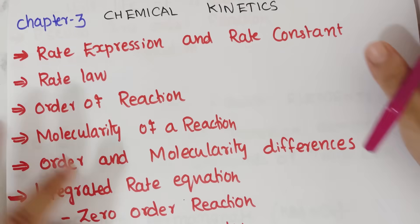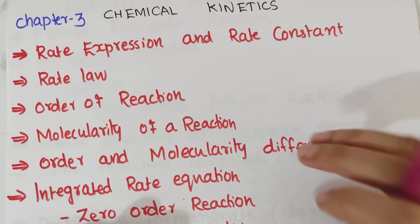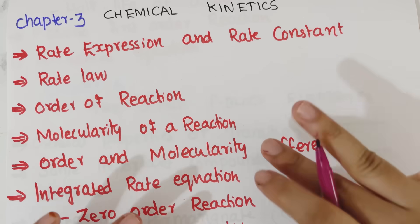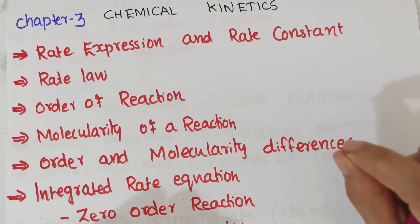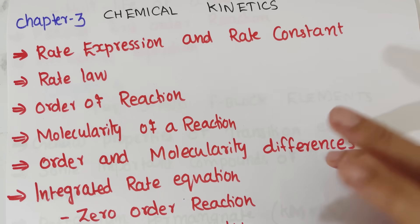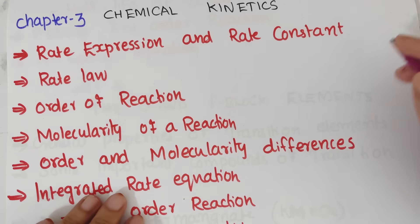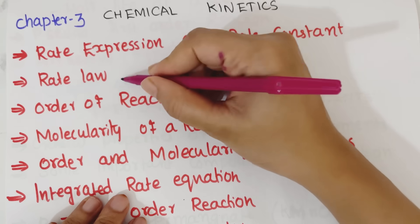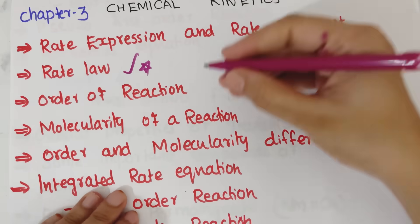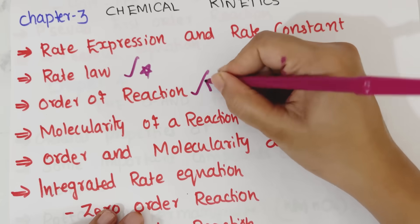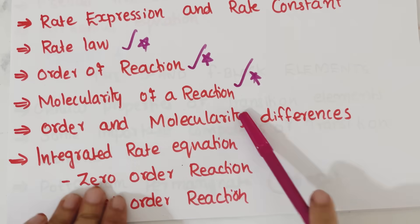The next chapter is chemical kinetics — this involves collision theory and numerical problems. If you learn what rate expression is, what rate law is, order of reaction, and molecularity — order and molecularity — we can see the difference between each.